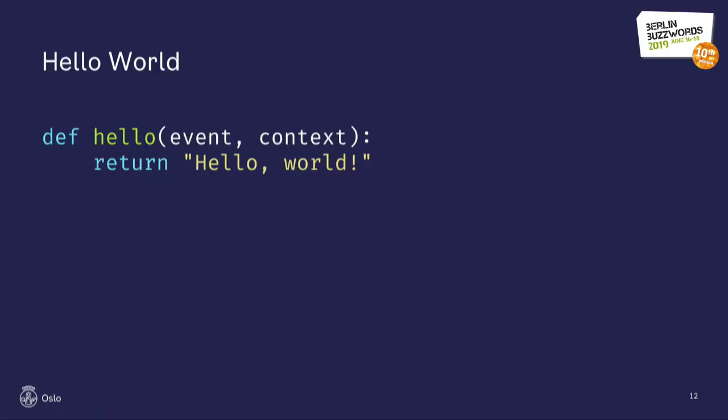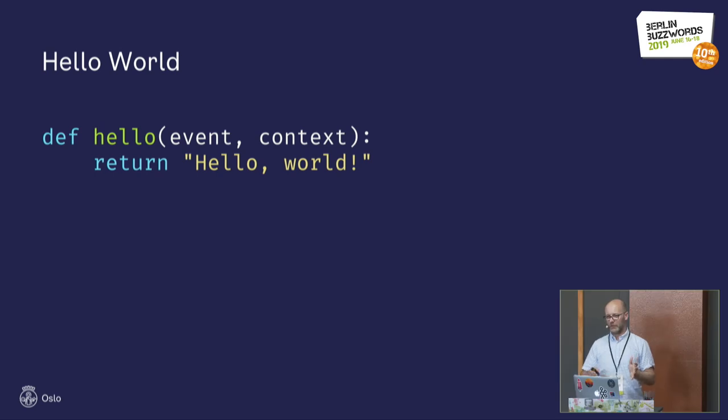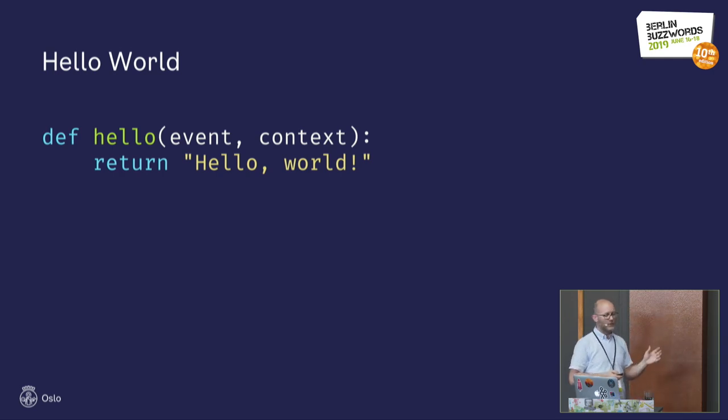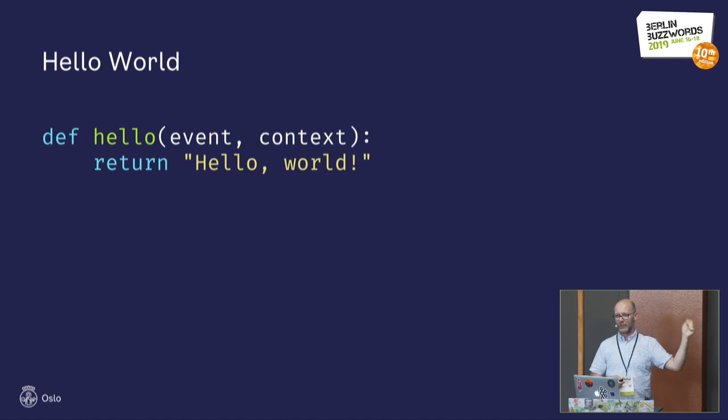All good demos should start with hello world. This is the simplest function I could create in Python. A Lambda function takes in an event — your input event — and a context, which is the Lambda runtime context. You can query things like how much memory you have available or how long runtime you have left. The function limit is 15 minutes. When you deploy, you upload the code and tell Lambda the function endpoint with the class and function name.